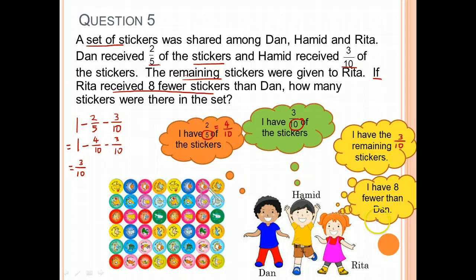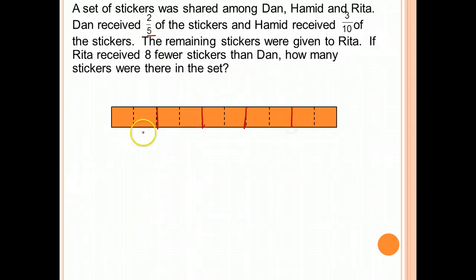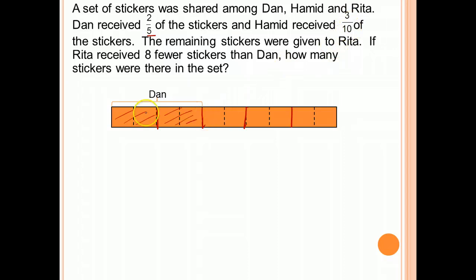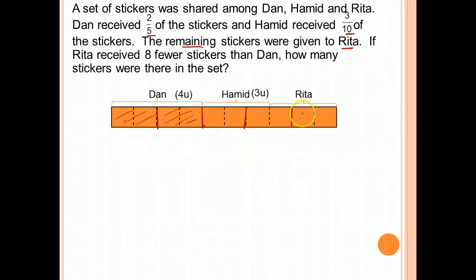Let's draw models to help us see. I have the whole. Dan received 2/5, so we cut it into 5 units and Dan receives 2. Hamid received 3/10, so each 1/5 is subdivided in half to make 10 units. Hamid received 3/10. The remaining stickers go to Rita, which is also 3/10. So Dan is 4 units, Hamid received 3 units, and Rita received 3 units.